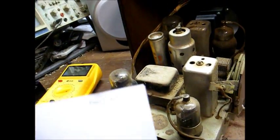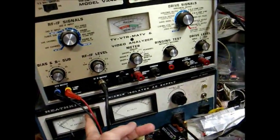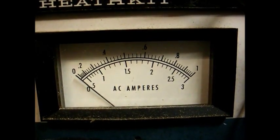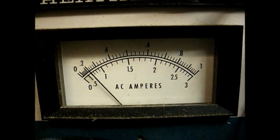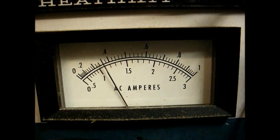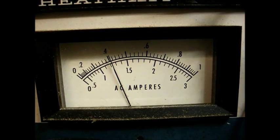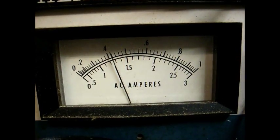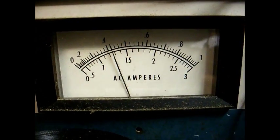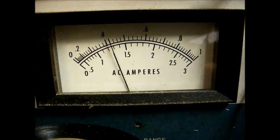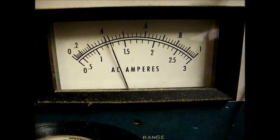We'll make all of our measurements with the tube rectifier first and then with a solid state. And to measure our turn-on surge current and our operational current, that'll be easy. We'll just use the current meter on our AC power supply here. Here we go. A little over 400 milliamperes.